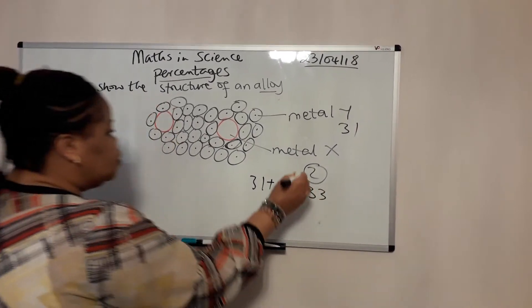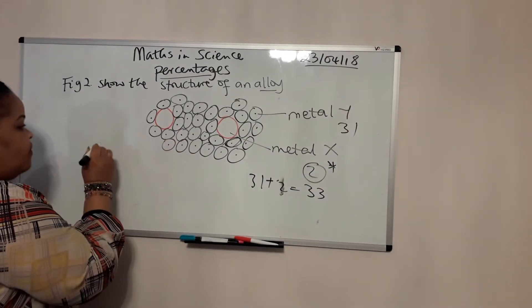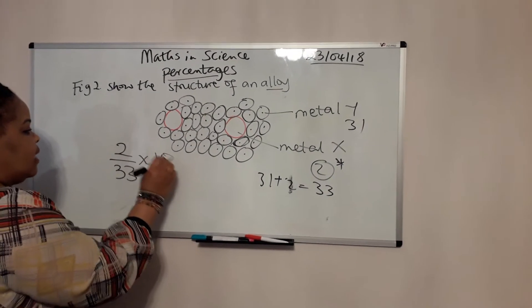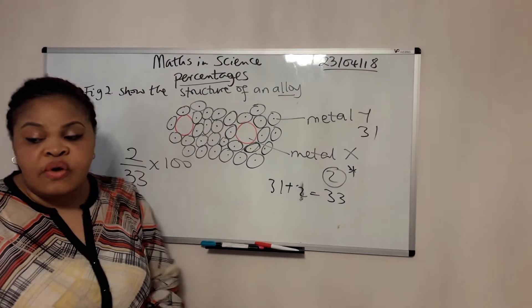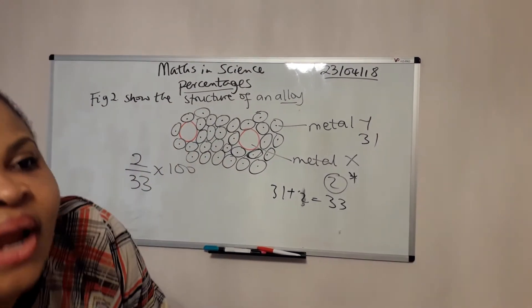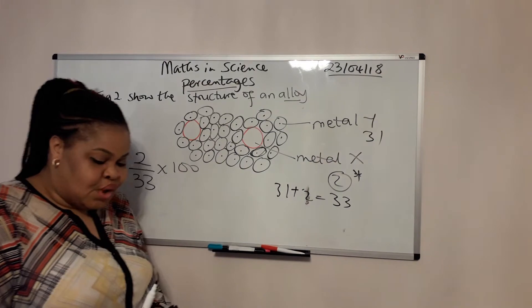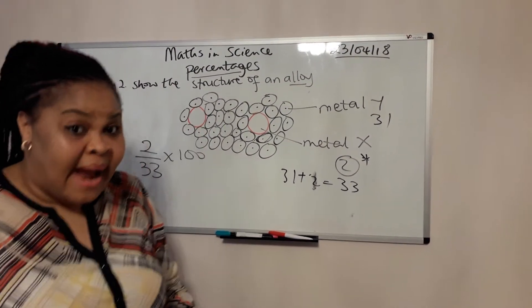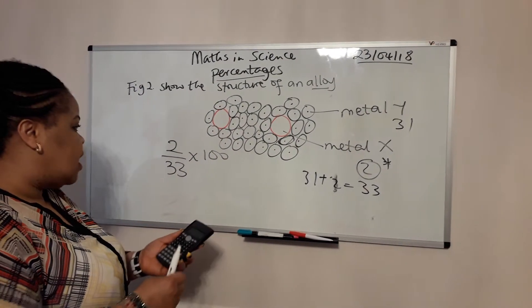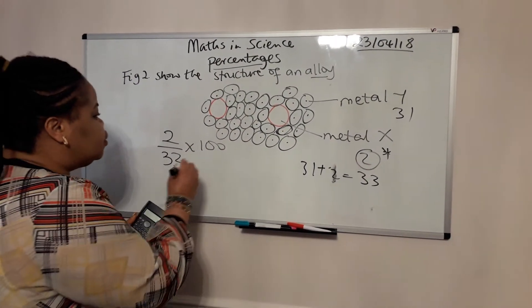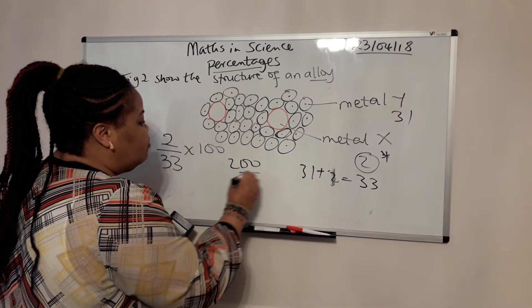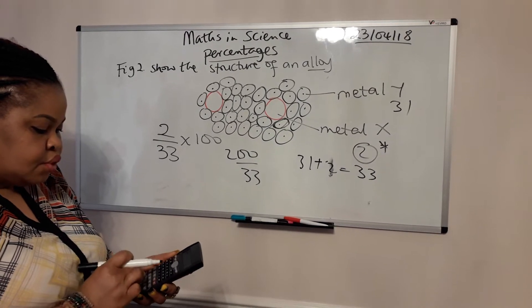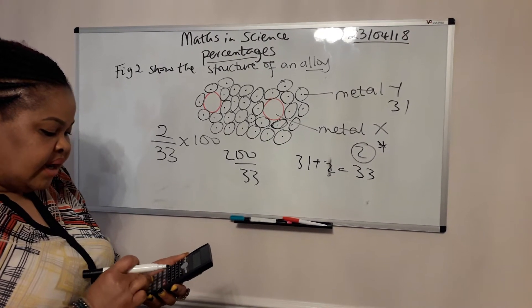So what you do: the one that you're asked to work out the percentage of, you pop it over the total and you multiply it by 100, because percentage means out of a hundred. And remember, you're allowed a calculator, so I am doing this to always prove to you that you're allowed the calculator. So we can do 2 times 100 is 200, divided by 33.